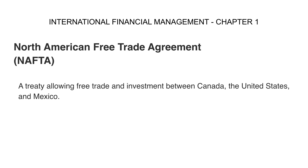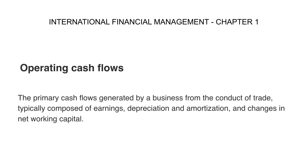North American Free Trade Agreement, short form NAFTA, is a treaty allowing free trade and investment between Canada, United States, and Mexico. Operating cash flows are the primary cash flows generated by a business from the conduct of trade, typically composed of earnings, depreciation and amortization, and changes in net working capital.